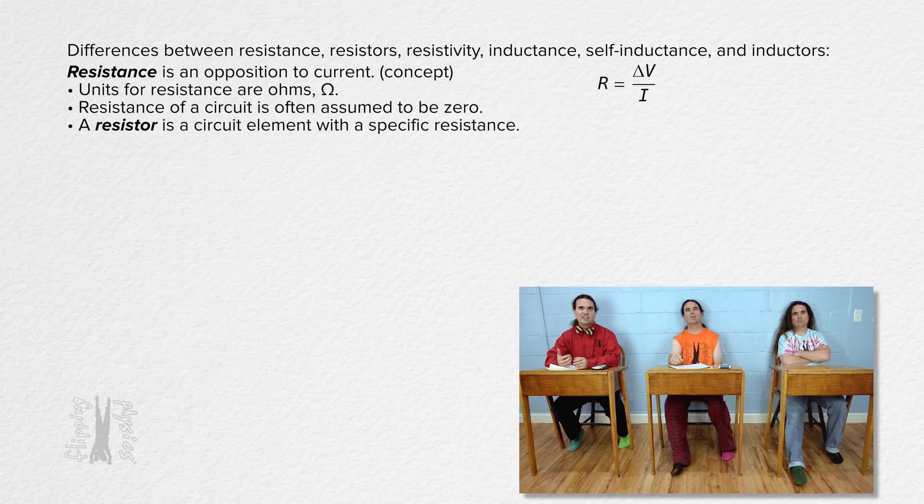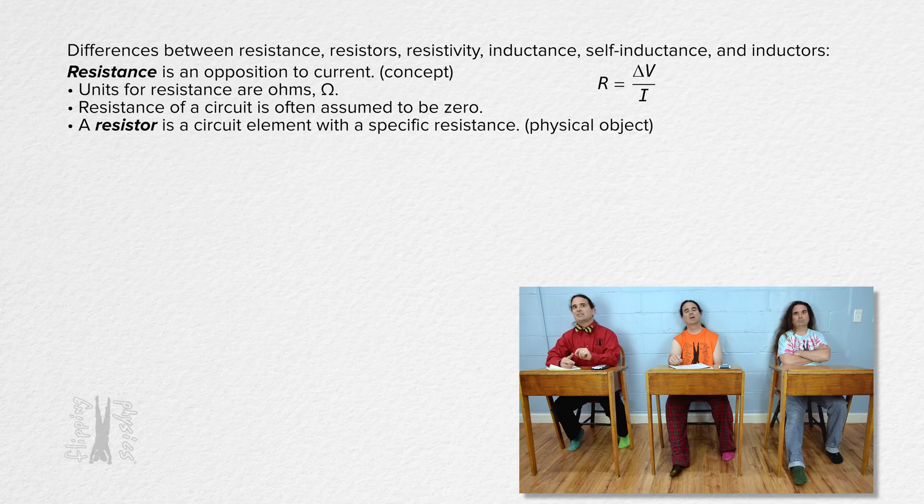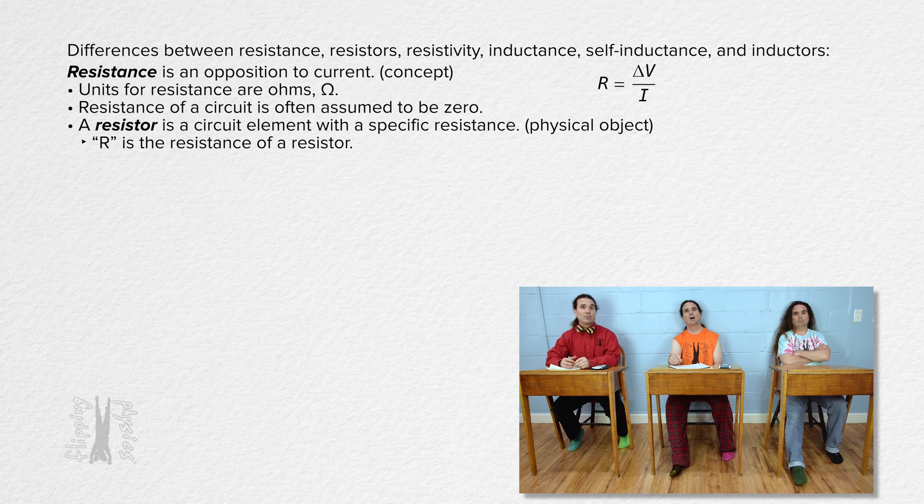On the other hand, a resistor is a circuit element with a specific resistance. That means a resistor is a physical object, unlike resistance which is a concept. Capital R is the variable we use for the resistance of a resistor.